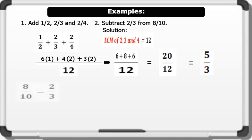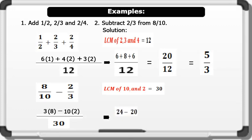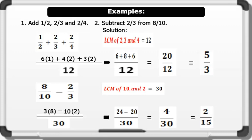Example 2: 8 over 10 minus 2 over 3. Following the same procedure, LCM of 10 and 3 is 30. 30 ÷ 10 = 3 × 8, minus 30 ÷ 3 = 10 × 2. This gives us 24 minus 20 all over 30, which equals 4 over 30. Reducing to the lowest term by dividing through by 2 equals 2 over 15. That's brilliant!